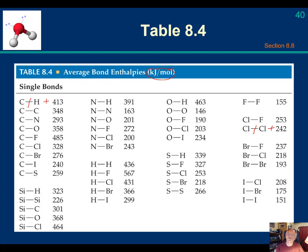Remember: if you had two carbon-hydrogen bonds being broken, you would need to multiply 413 by 2. It's not the case in this particular problem, but if you had two bonds of that type breaking, you would multiply 413 by 2. And that's a positive 413 because you're breaking those bonds.